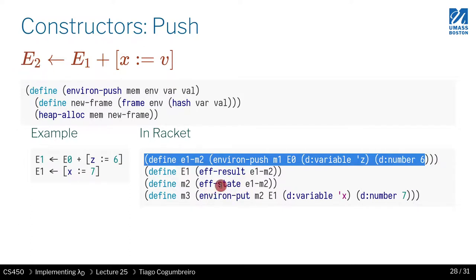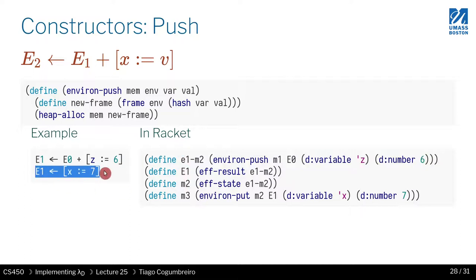Ignore left hand side and right hand side—just remember that an eff contains two things: the result which is e2, and the state which is the new memory m2.